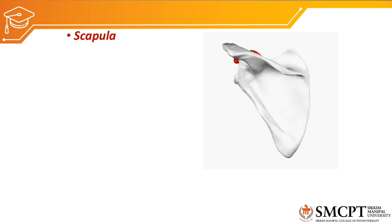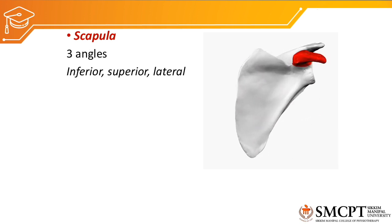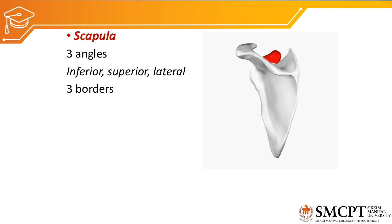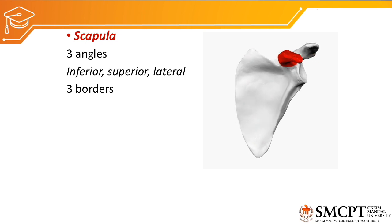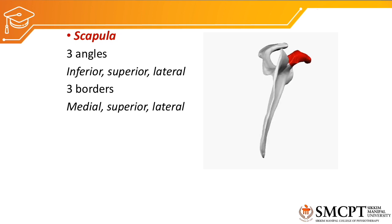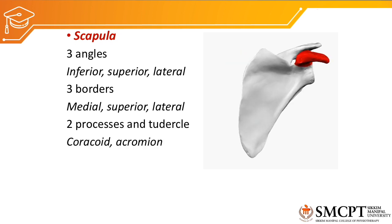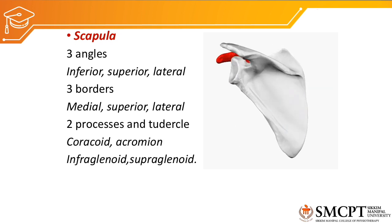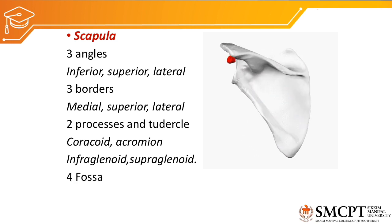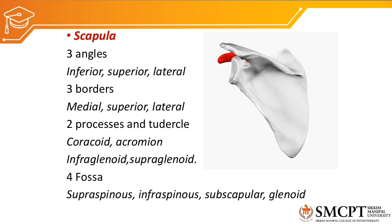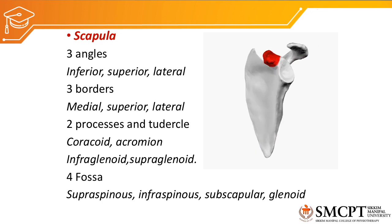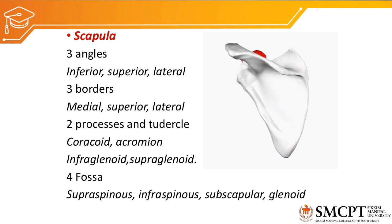The next bone is the scapula. It has three angles: inferior, superior, and lateral. It has three borders: medial, superior, and anterior border. Two processes and tubercles are present in the scapula: the coracoid and acromion. It also has an infraglenoid tubercle and a supraglenoid tubercle above and below the glenoid fossa. The scapula contains four fossae: supraspinous fossa, infraspinous fossa, subscapular fossa, and glenoid fossa.